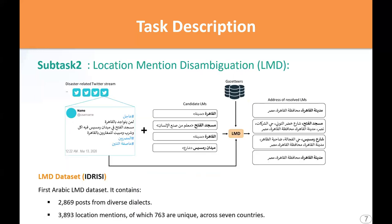For subtask two, location mention disambiguation, or LMD, it deals with accurately identifying location mentions in microposts and linking them to specific toponyms in geo-positioning datasets. This involves retrieving and ranking the candidate toponyms for each location mention in a post. For this task, we provided the ADRICI dataset, the first Arabic LMD dataset. It contained 2,869 posts from various dialects featuring 3,893 location mentions across seven countries.